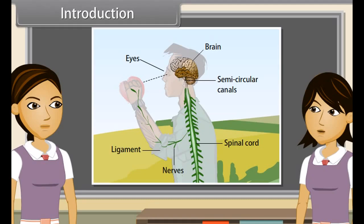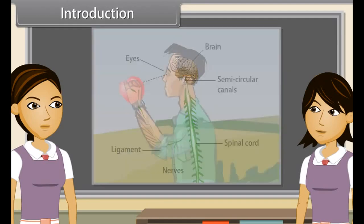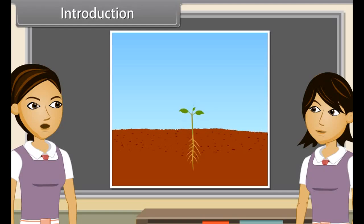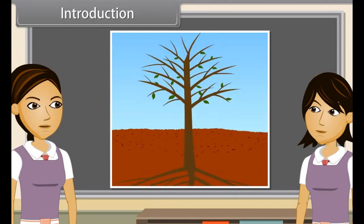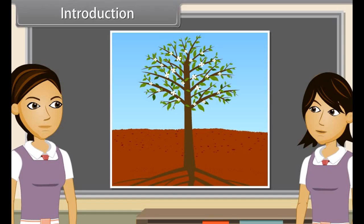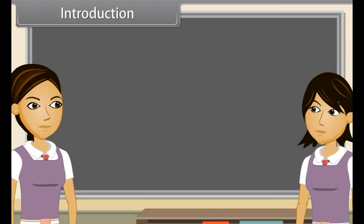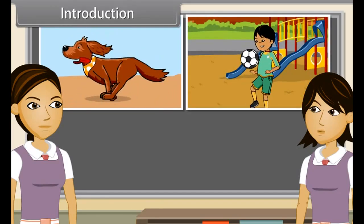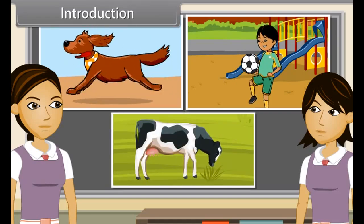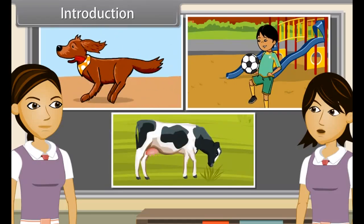Something is called living when a movement is observed in it. This movement can be due to growth, as in plants — a seed germinates and grows — and this movement in plants stops after a particular time. On the other hand, in animals and some plants, these movements are not connected with growth. Some examples are the running of a dog, children playing football, and cows chewing cud. These movements are not related to growth.